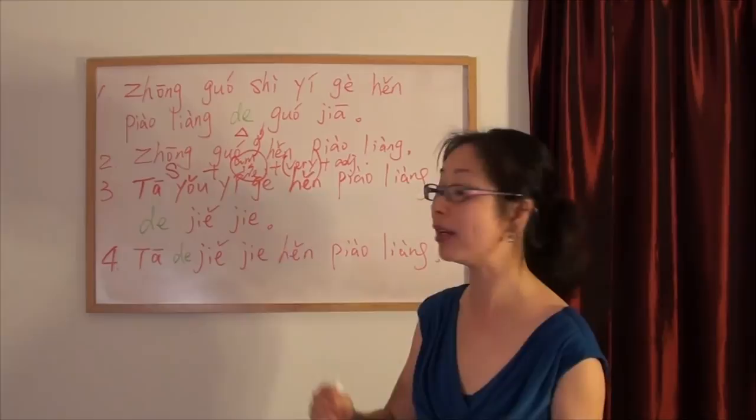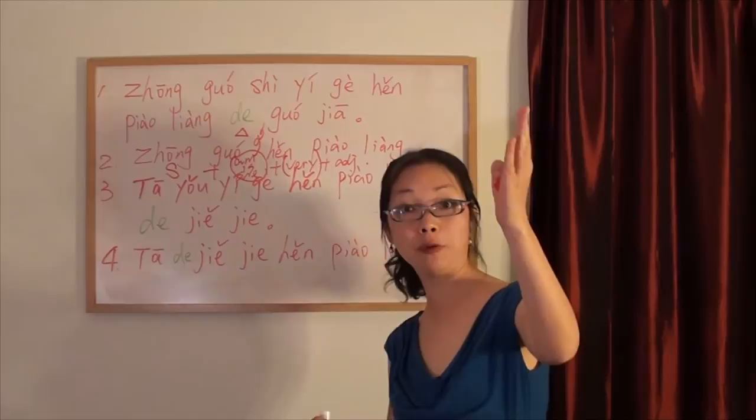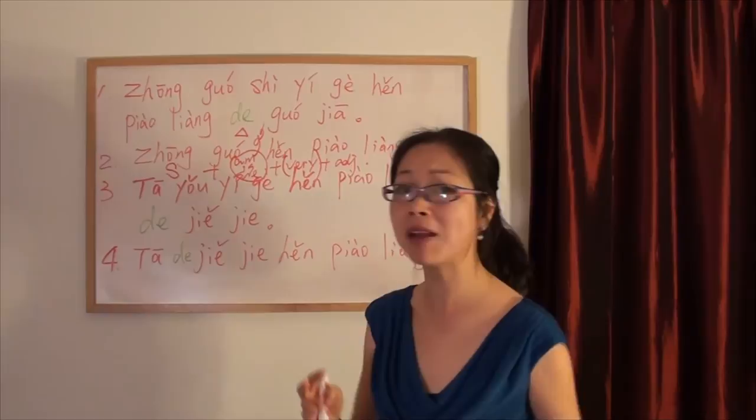No matter there is a very behind the adjective or not, we usually often translate very there. Like you will say, China is beautiful. In Chinese, we will say, 中国很漂亮.